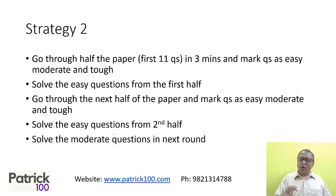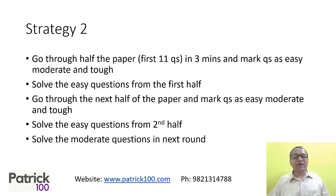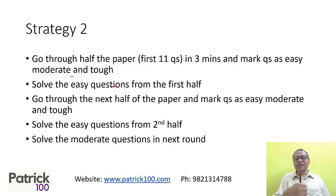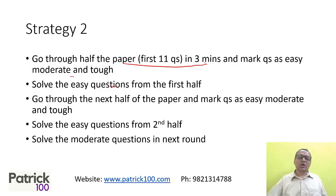Strategy two is a modification of the first strategy. If you feel stressed by going through all 22 questions first, then go through half the paper first — 11 questions in three minutes. So instead of six minutes for all 22 questions, divide the paper into two parts of 11 questions each. In the first three minutes, go through the first 11 questions using the same strategy: mark easy, medium, and tough. Then solve the easy questions in the first half of the paper.